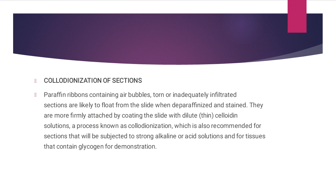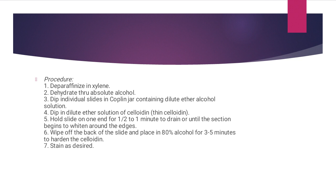The procedure for colloidionization: first, deparaffinize the sample with silene; second, dehydrate through absolute alcohol; third, dip individual slides in a Coplin jar containing dilute ether-alcohol solution; fourth, dip in dilute ether solution of thin colloidion; fifth, hold the slide on one end for one-half to one minute and drain until the section begins to whiten around the edges; sixth, wipe the back of the slide and place in 80% alcohol for three to five minutes to harden the colloidion; seventh, stain as desired.